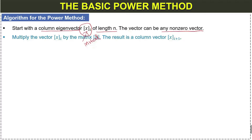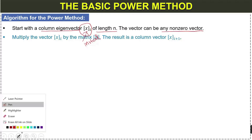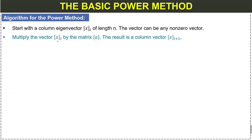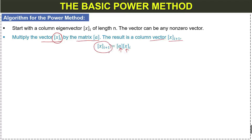Step two: multiply the starting vector or the initial vector by the matrix A. The result is a new column vector xi+1. So when we multiply the matrix A with the initial vector, we obtain a new column vector xi+1.